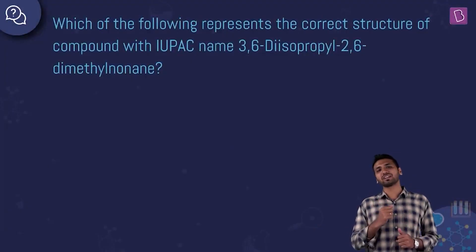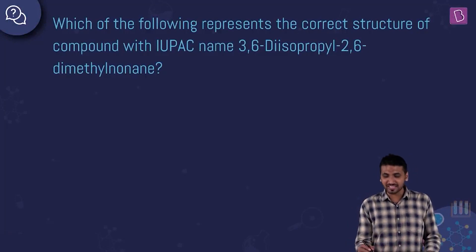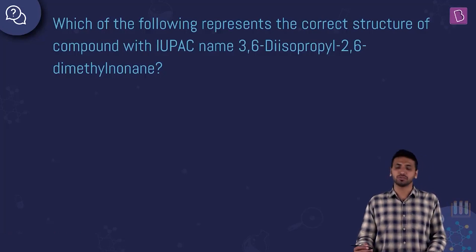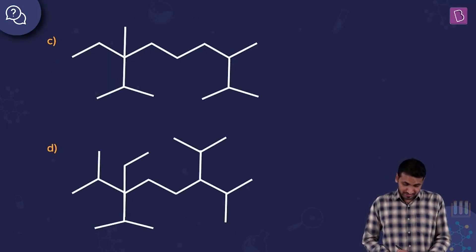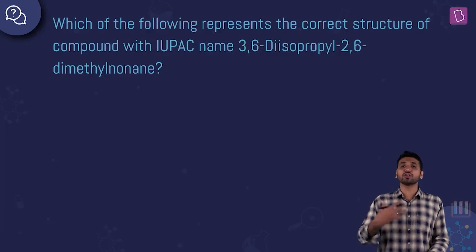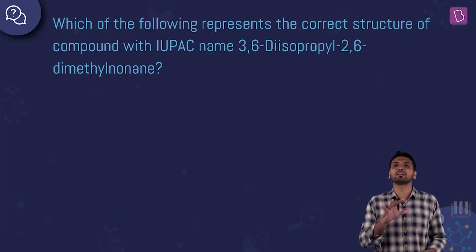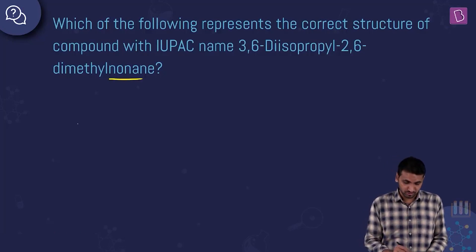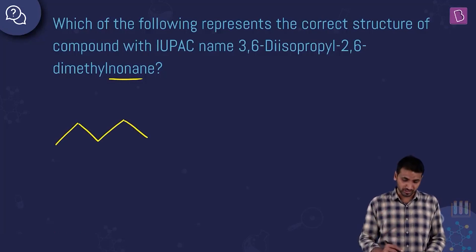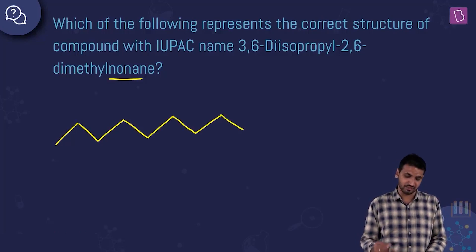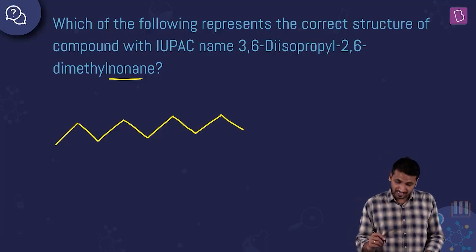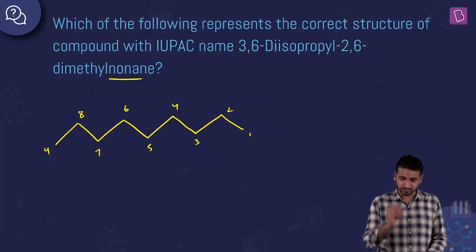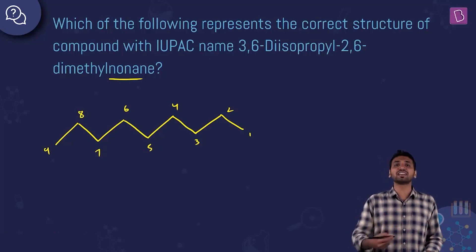Here we have a question on IUPAC nomenclature. Which structure correctly represents 3,6-diisopropyl-2,6-dimethylnonane? Let's draw the structure from the name. 'Non' means nine carbons, so draw a nine-carbon chain: 1-2-3-4-5-6-7-8-9. We need diisopropyl substituents at positions 3 and 6, and dimethyl substituents at positions 2 and 6.